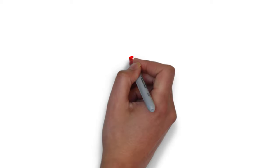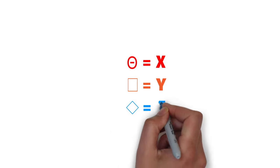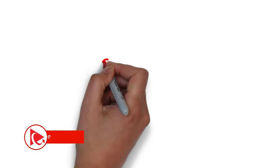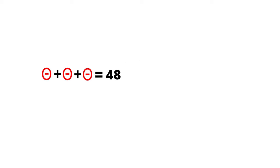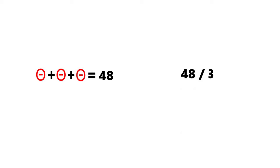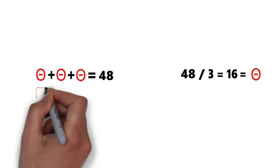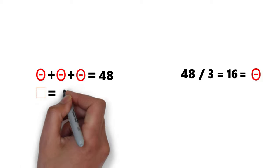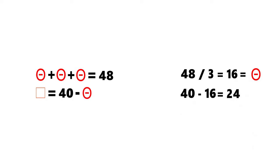The symbols are no different from X, Y, and Z in math. From the first expression, circle equals 48 divided by 3, which is 16. In the next step, square equals 40 minus circle, which is 40 minus 16, equaling 24.